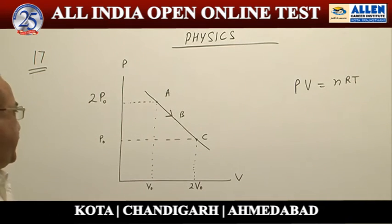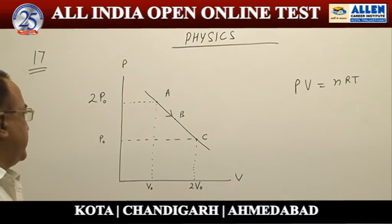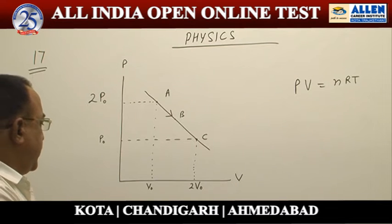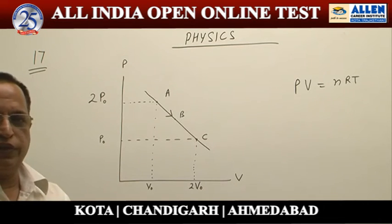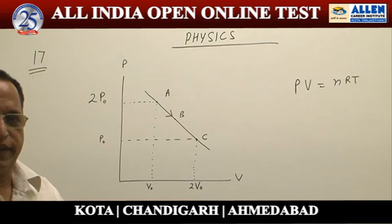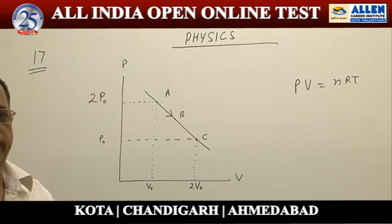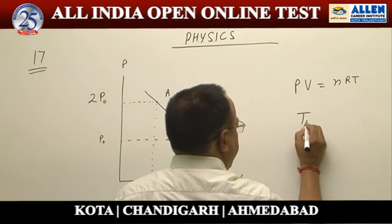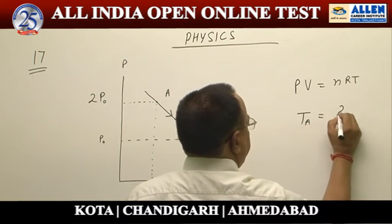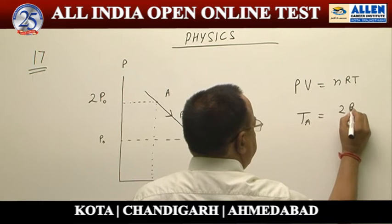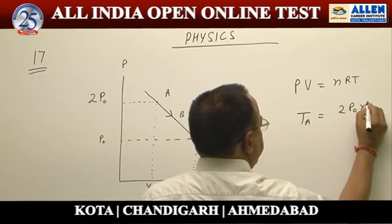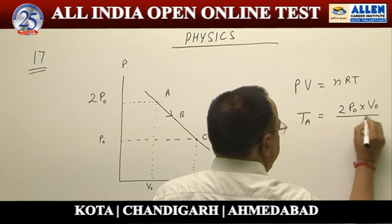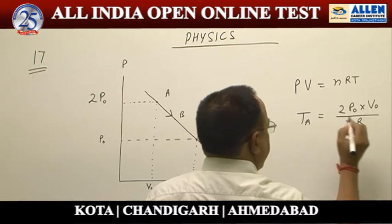Here, the gas is ideal, which means PV = nRT is applicable. At point A, pressure is 2P₀ and volume is V₀. So the temperature at point A is T_A = 2P₀V₀ / nR.